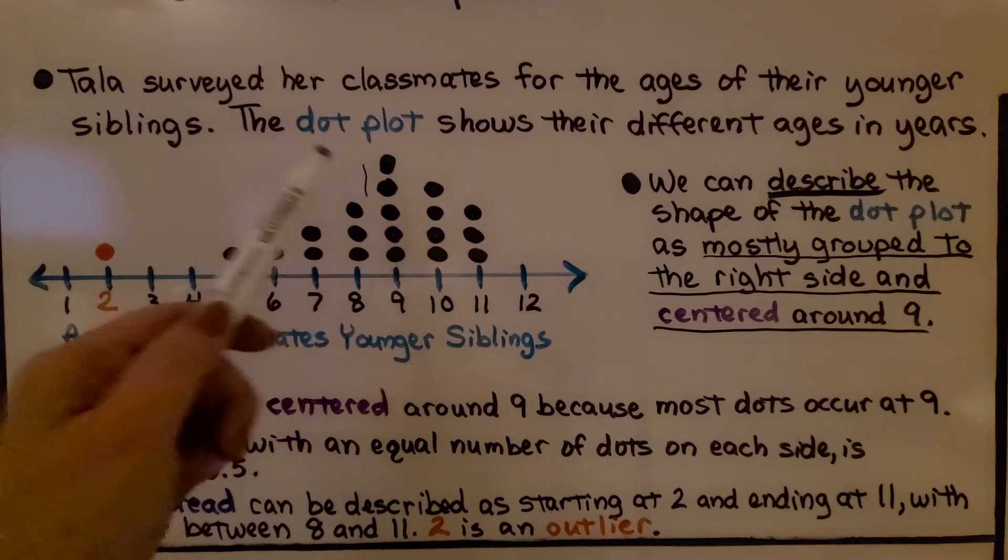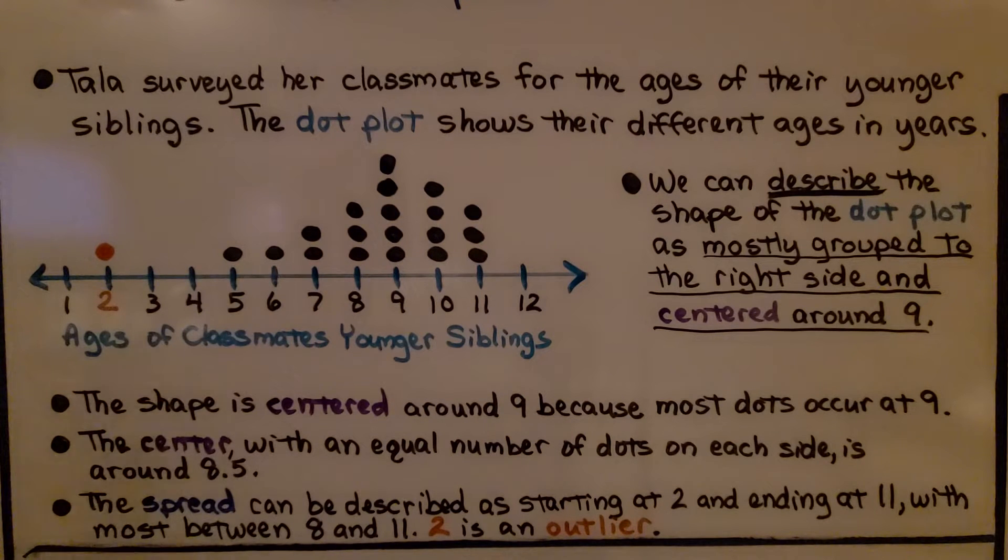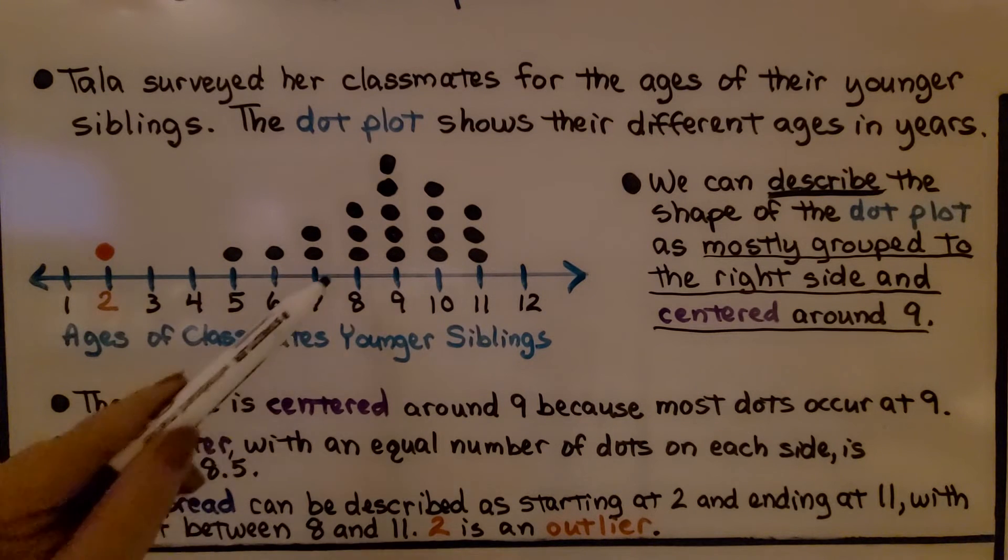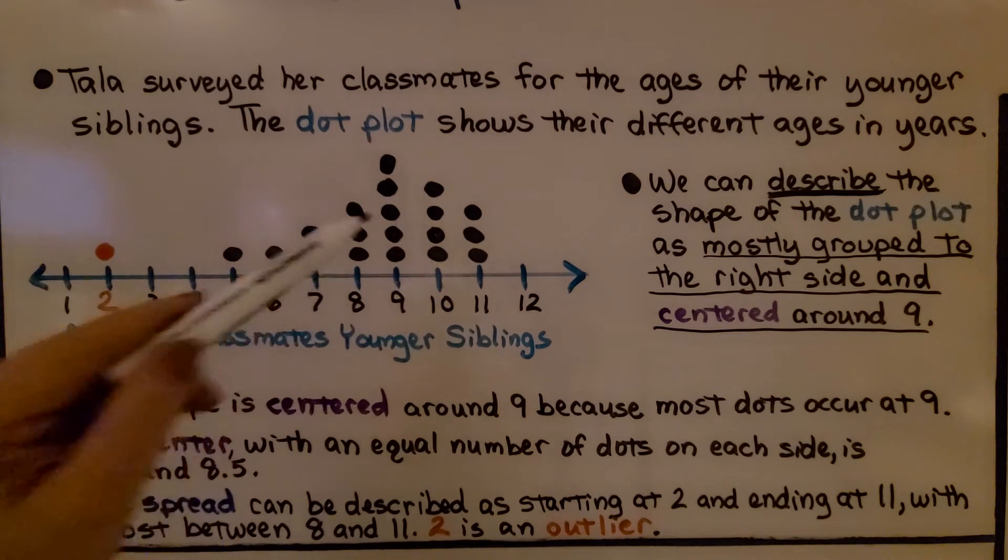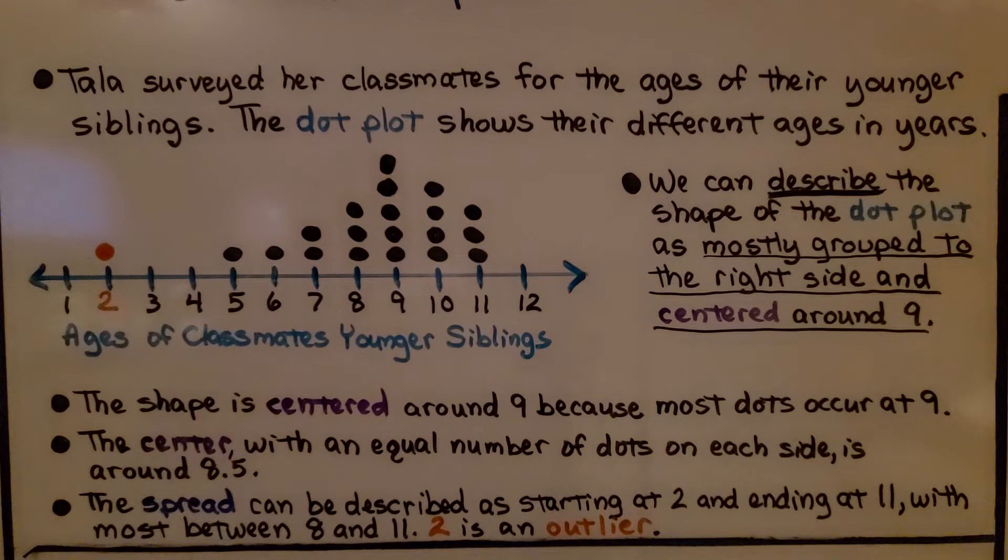The spread can be described as starting at 2 and ending at 11, with most between 8 and 11. This is where most of the data values are, where most of the dots are. And 2 is an outlier.